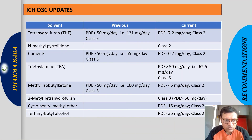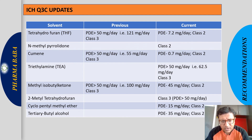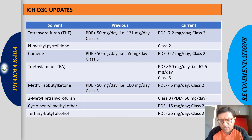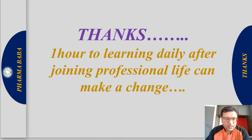Some recent updates to solvent classifications: Tetrahydrofuran (THF) was previously Class 3 (PDE 121 mg/day), but based on a revised study its PDE is now 7.2 mg/day, placing it in Class 2. Methyl pyrrolidone has been added as Class 2 (previously Class 3). Triethylamine remains in Class 2. Methyl isobutyl ketone moved from Class 3 to Class 2. 2-Methyltetrahydrofuran is Class 3. Cyclopentyl methyl ether is Class 2. Tertiary butyl alcohol is Class 2. You should take note of these updates.